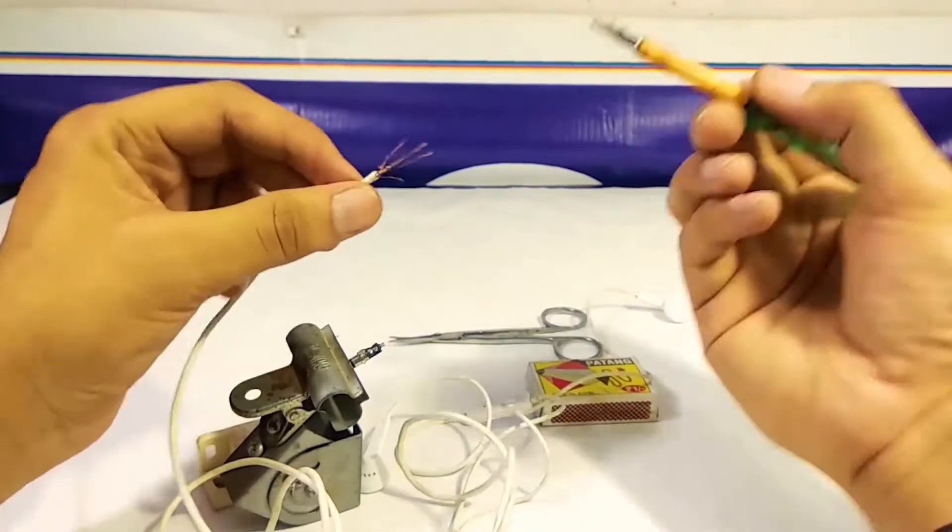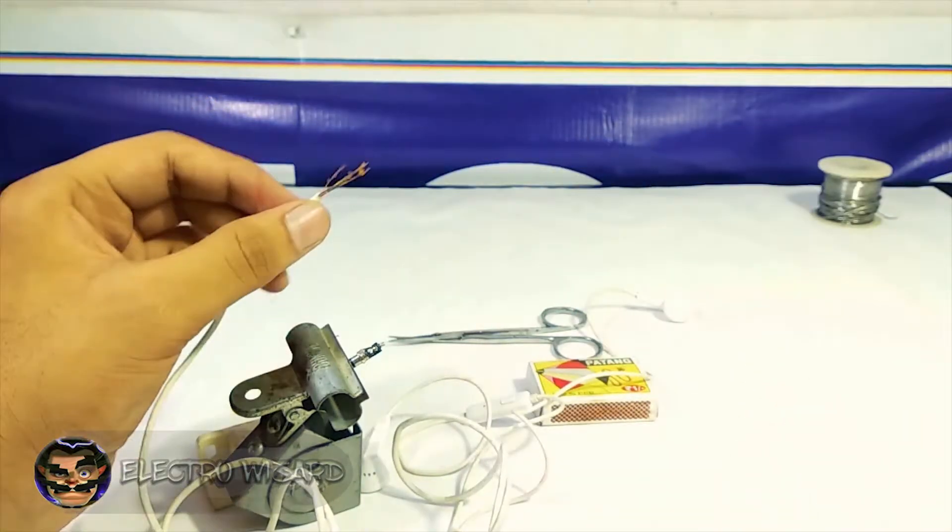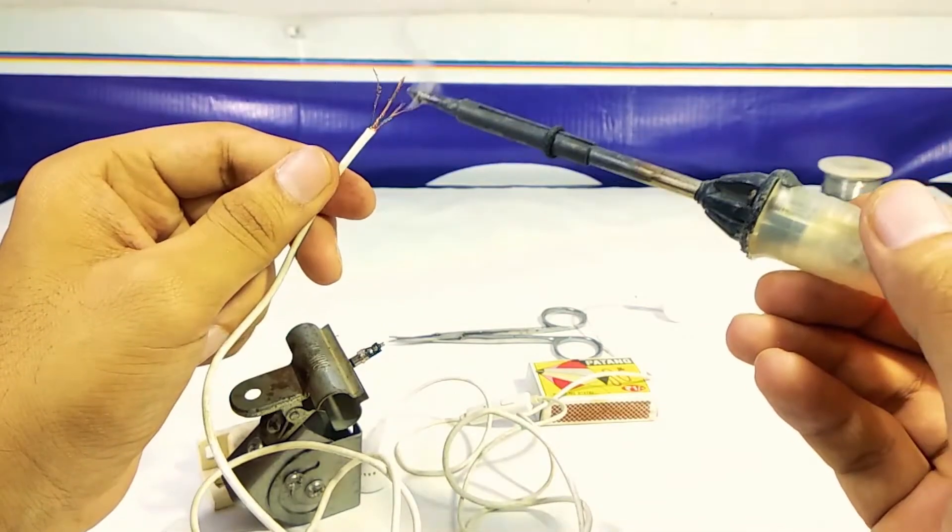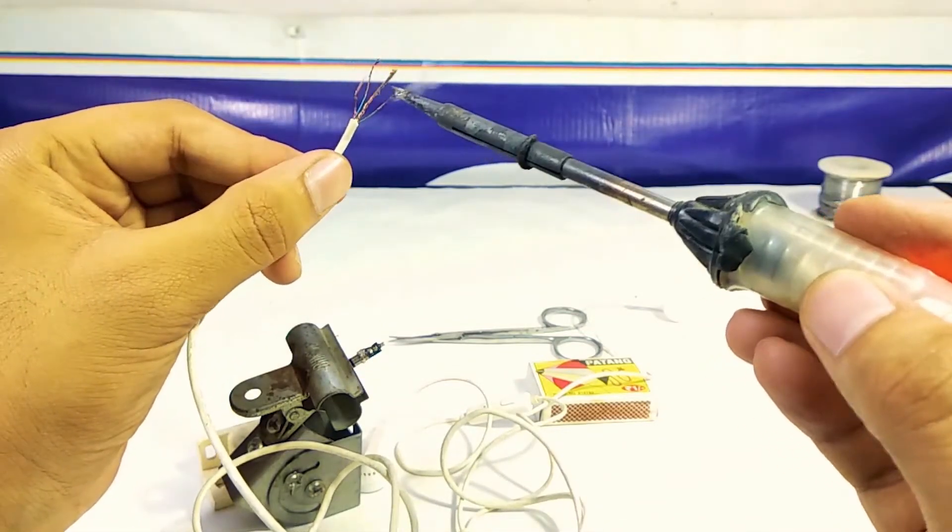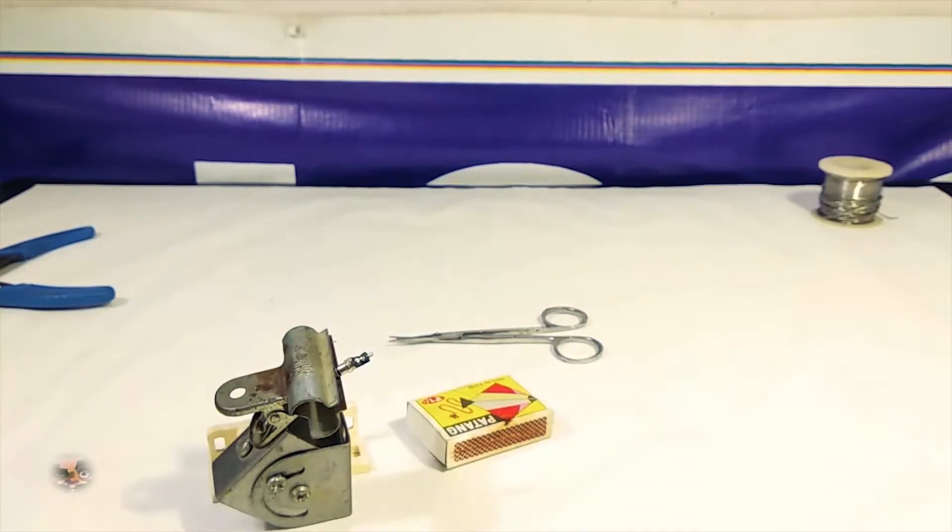Now apply flux to the wires and repeat the same process as we've done on the 3.5 jack. The tinning process is basically used to increase the efficiency of the contact points and it makes the process of soldering easy.